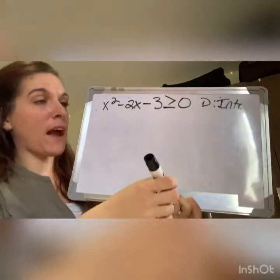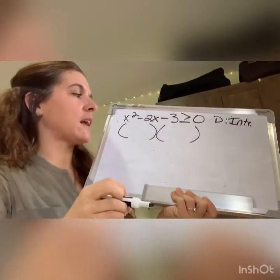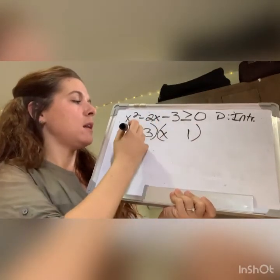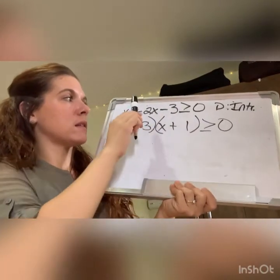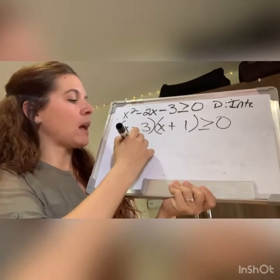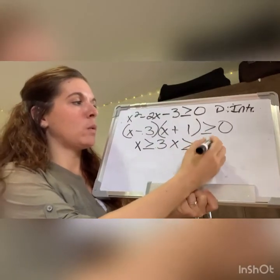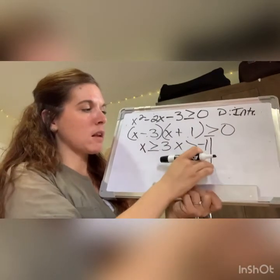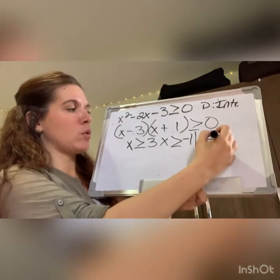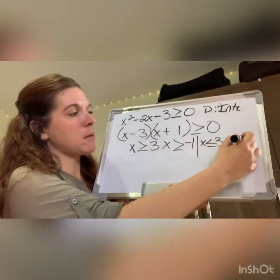For problem 2, there's one more step because we have to factor first. We have x² - 2x - 3 ≥ 0, with domain of integers. I've already moved the 3 to this side so we can factor. What factors of -3 add up to -2? It's -3 and +1, because -3 + 1 = -2. So we get (x - 3)(x + 1) ≥ 0. Solving: x ≥ 3 and x ≥ -1 for the positive-positive case.